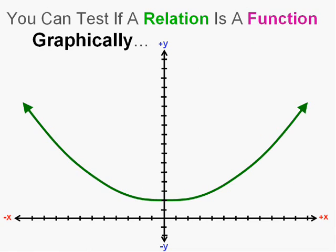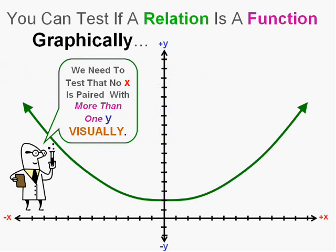Now, consider that these pairings can actually be x, y points. If we look at the picture of a relation, we can test whether that relation is a function graphically. Excuse me, Professor Brainiac.